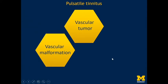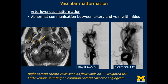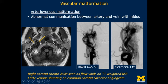The next major category is vascular malformation. These come in various forms: an arteriovenous malformation where the artery and vein communicate abnormally with the presence of a nidus, or an arteriovenous fistula where they communicate without a nidus. Here is an example of a patient with an AV malformation in the right carotid sheath. The right side is expanded with multiple flow voids. This patient underwent conventional catheter angiography, which demonstrated contrast shunting early into the right jugular vein — a complex AV malformation causing significant pulsatile tinnitus.